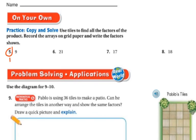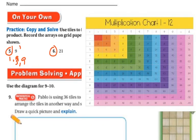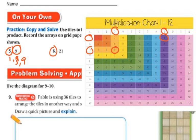Let's do a few of the on-your-own ones. I know that 1 times 9 is 9, and I also know that 3 times 3 is 9. So 1, 3, and 9 are going to be my factors. I'm going to show you a multiplication chart — you can look across it. Here's 9 on the chart; the factors are 3 and 3, and also 9 times 1. Those are my factors: 1, 3, and 9.